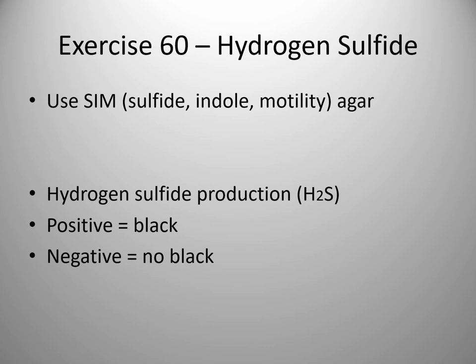Exercise 60 is looking for the production of hydrogen sulfide. For this, we would use what we call a SIM agar tube. In this particular exercise, all we are looking for is the hydrogen sulfide production. SIM stands for sulfide, indole, motility. There is a later exercise where we will look at both the indole and the motility aspect, but the purpose of this exercise is focusing on the sulfide. If the organism is able to break the media down and produce hydrogen sulfide, it will produce a black color. If it does not produce hydrogen sulfide, it would be negative and there would be no black coloration at all.